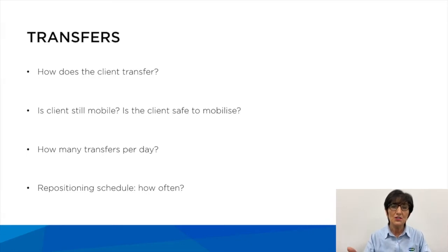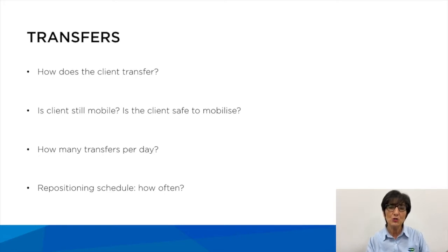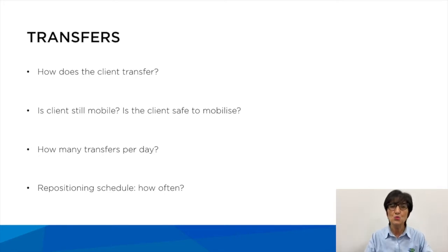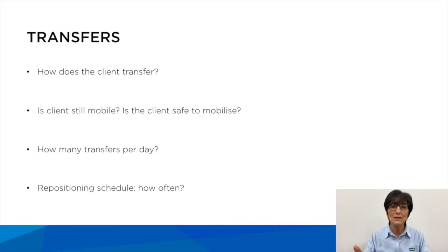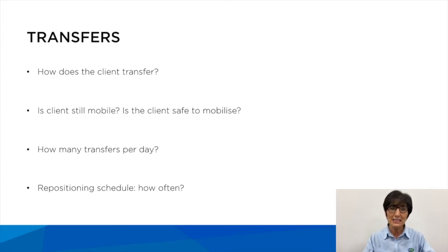Is the client still mobile and are they safe to mobilise? How long is the client likely to maintain that mobility? How many transfers do they do per day and what is their repositioning schedule? The Phoenix and the Sorento chairs can change position using a handset — the caregiver or the client can do that. So we need to identify how often the client needs to be repositioned every day.